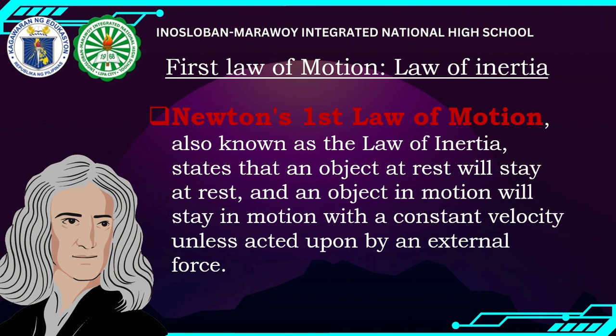Newton's first law of motion, also known as the law of inertia, states that an object at rest will stay at rest, and an object in motion will stay in motion with constant velocity, unless acted upon by an external force. This is similar to Galileo's idea that an object will continue moving if there is no friction.